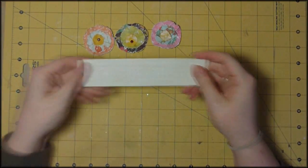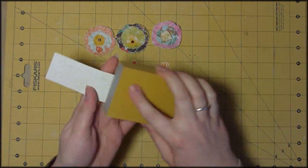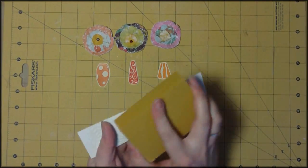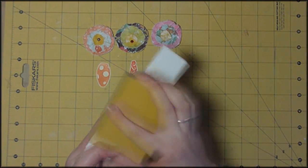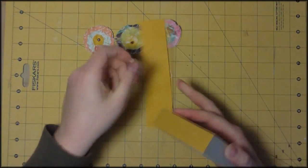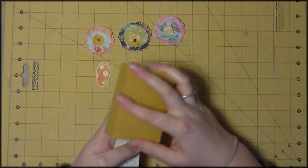Here I've used the cutter book embossing folder and I'm using some whitewash collection by Coordinations. So it's white cardstock that's got different colors on the inside of the cardstock.